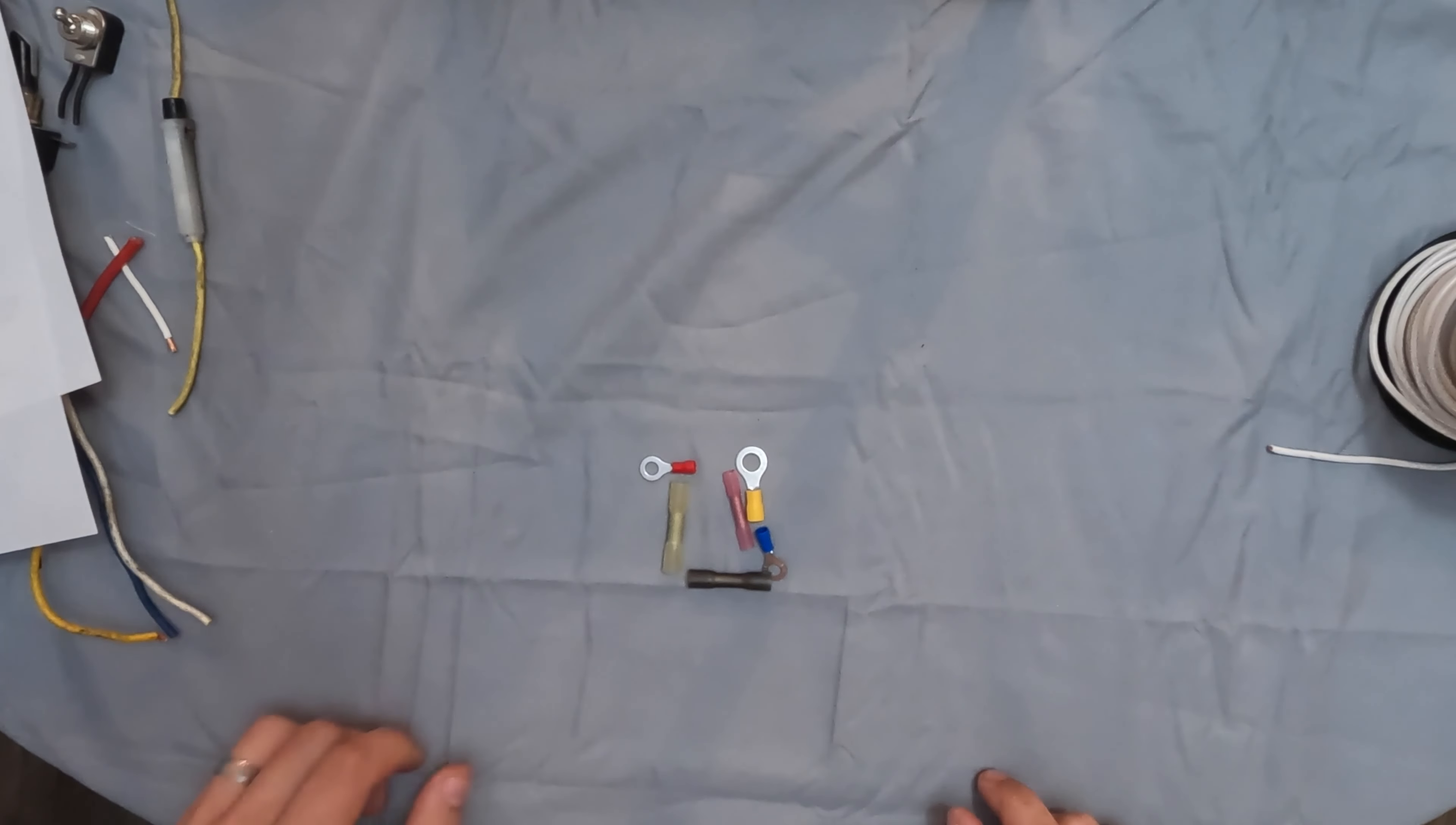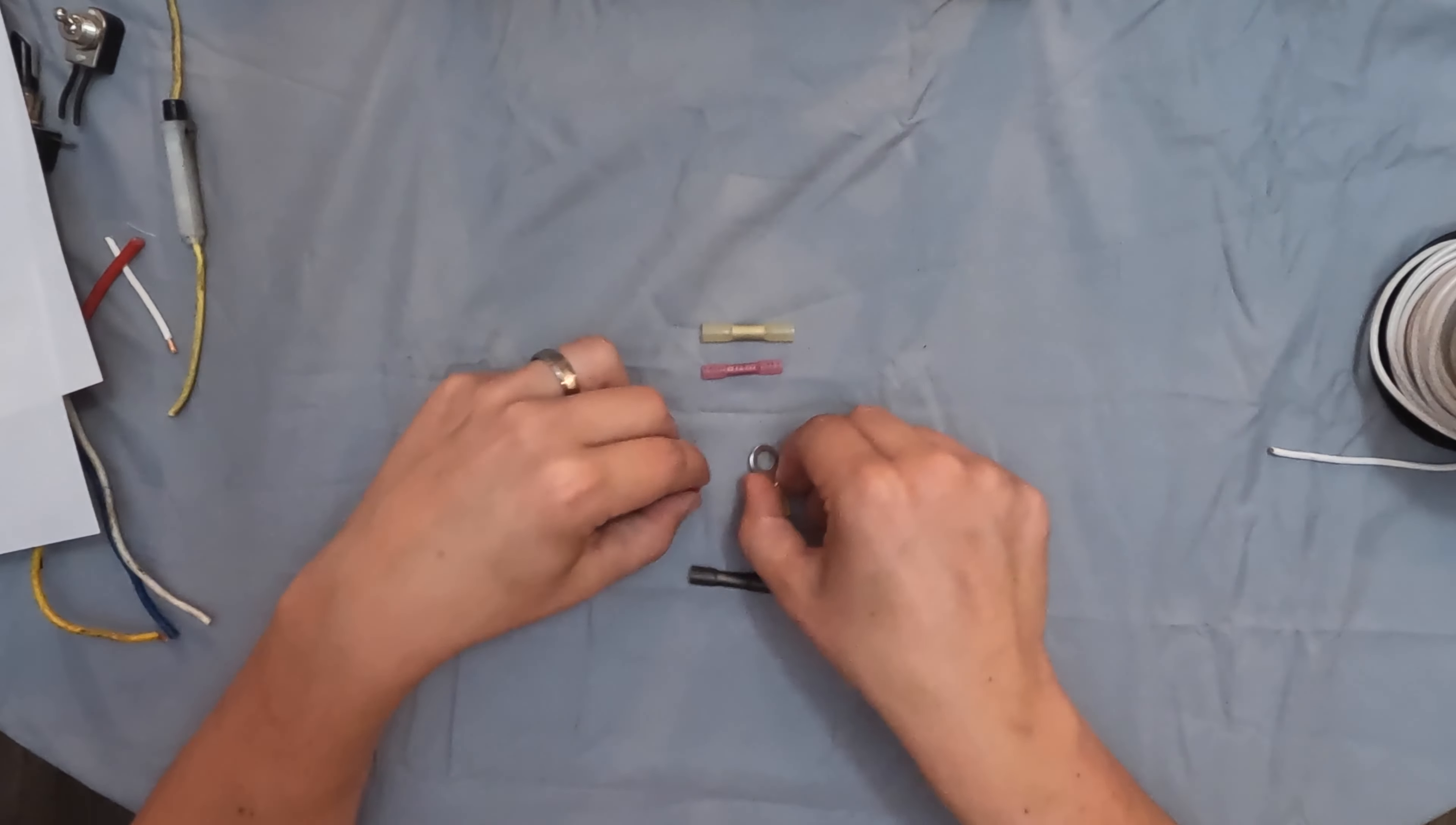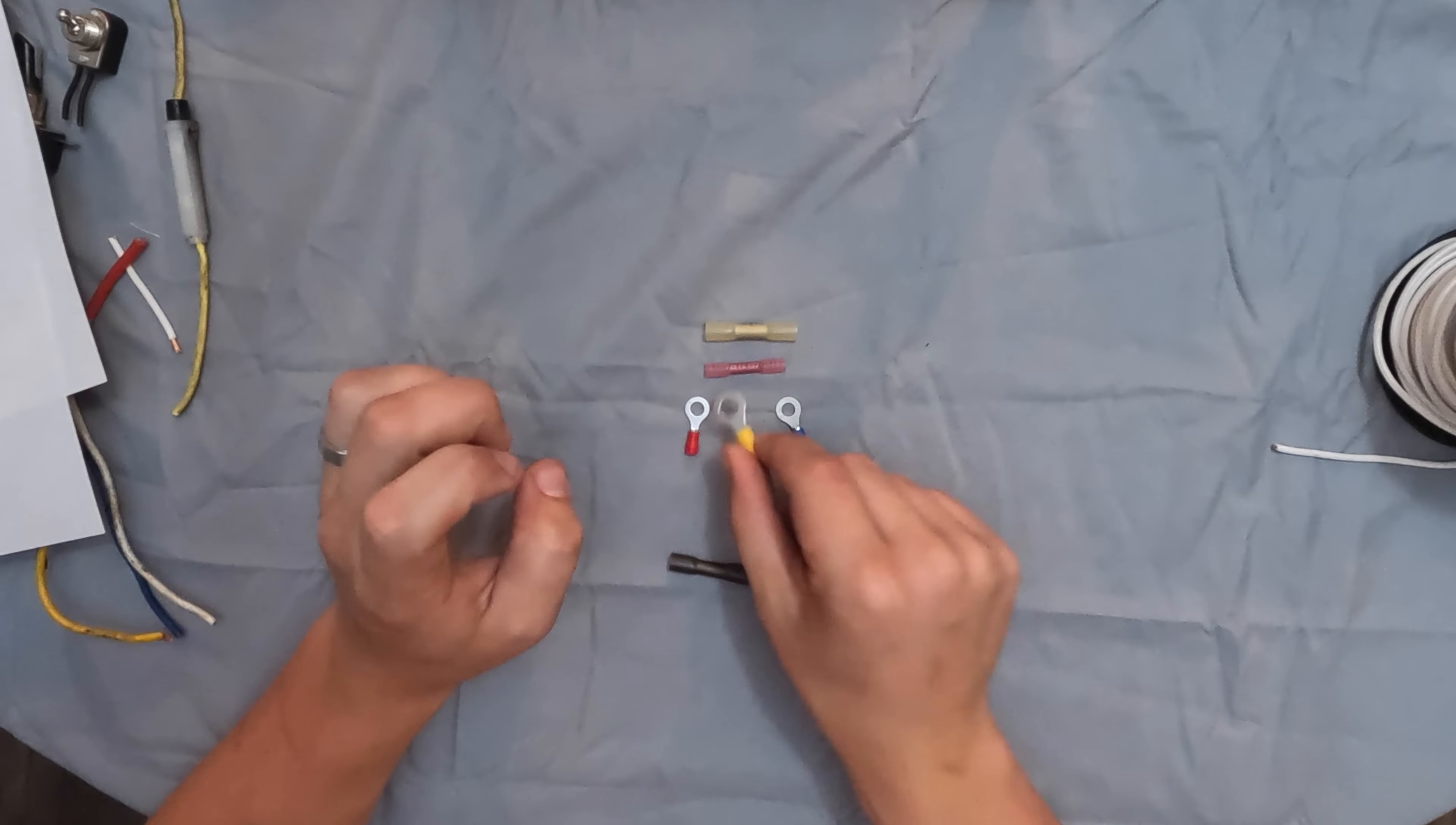Another thing you're going to need are wire connectors. So I have different ones here. This is made for 12 to 10 gauge wires. This one is a lot smaller. So it's made for 18 to 22 gauge. And then we have these eye connectors here. So let's say we're making a ground wire. We would connect this and then the proper size grounding bolt would go through it.